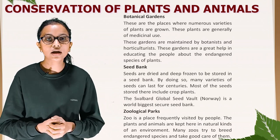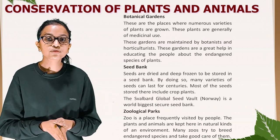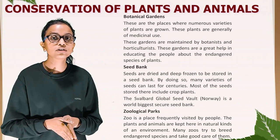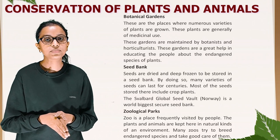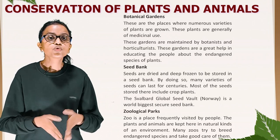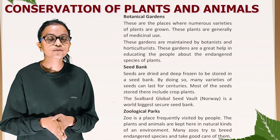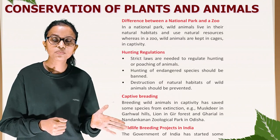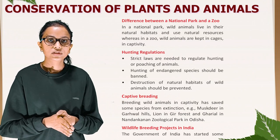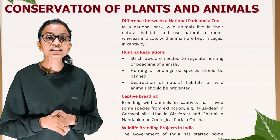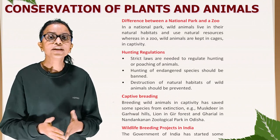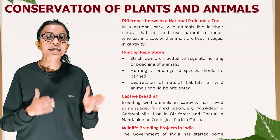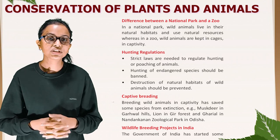Zoological parks: a zoo is a place frequently visited by people where plants and animals are kept in natural kinds of environments. Many zoos try to breed endangered species and take good care of them. The difference between a national park and a zoo is that in a national park wild animals live in their natural habitats and use natural resources, whereas in a zoo wild animals are kept in cages in captivity.